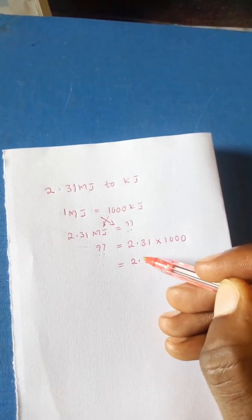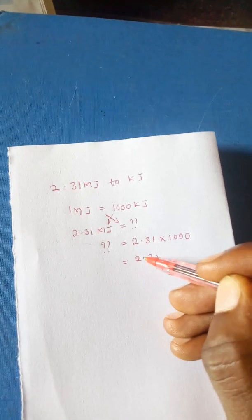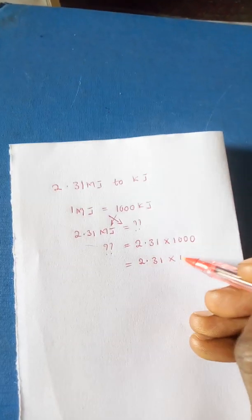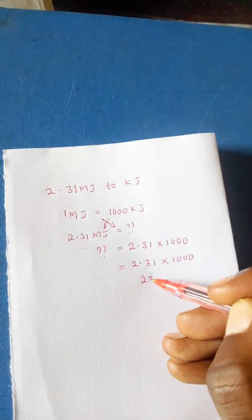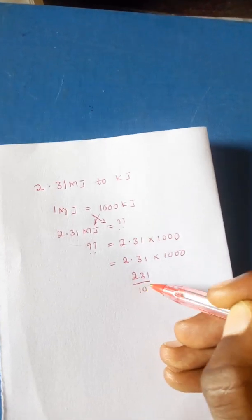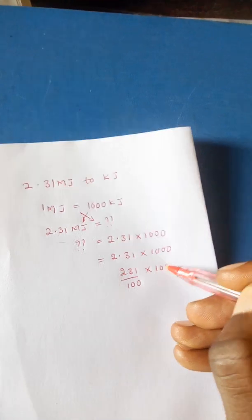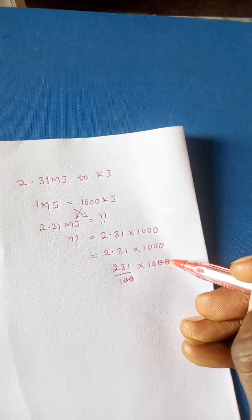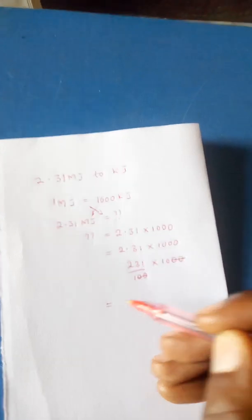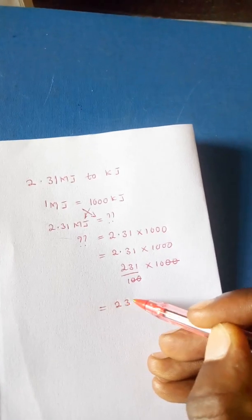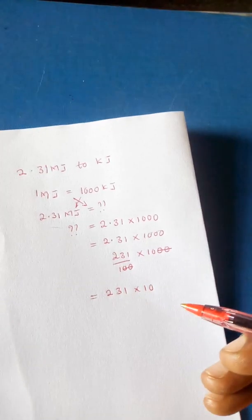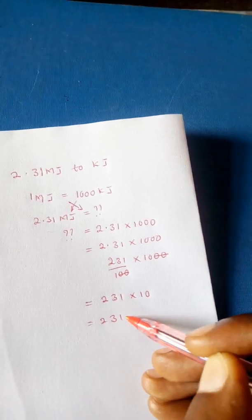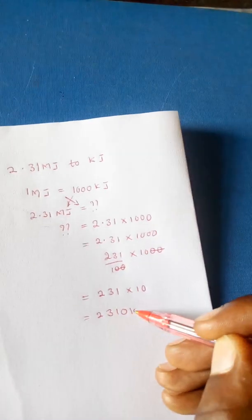Now this is the same as 2.31. When we multiply 2.31, let's do this. This one times this, it's going to be 231 out of 100 when we make this a fraction, then we multiply by 1000. So this will go with this if I'm to use canceling, then here we remain with this times 10.